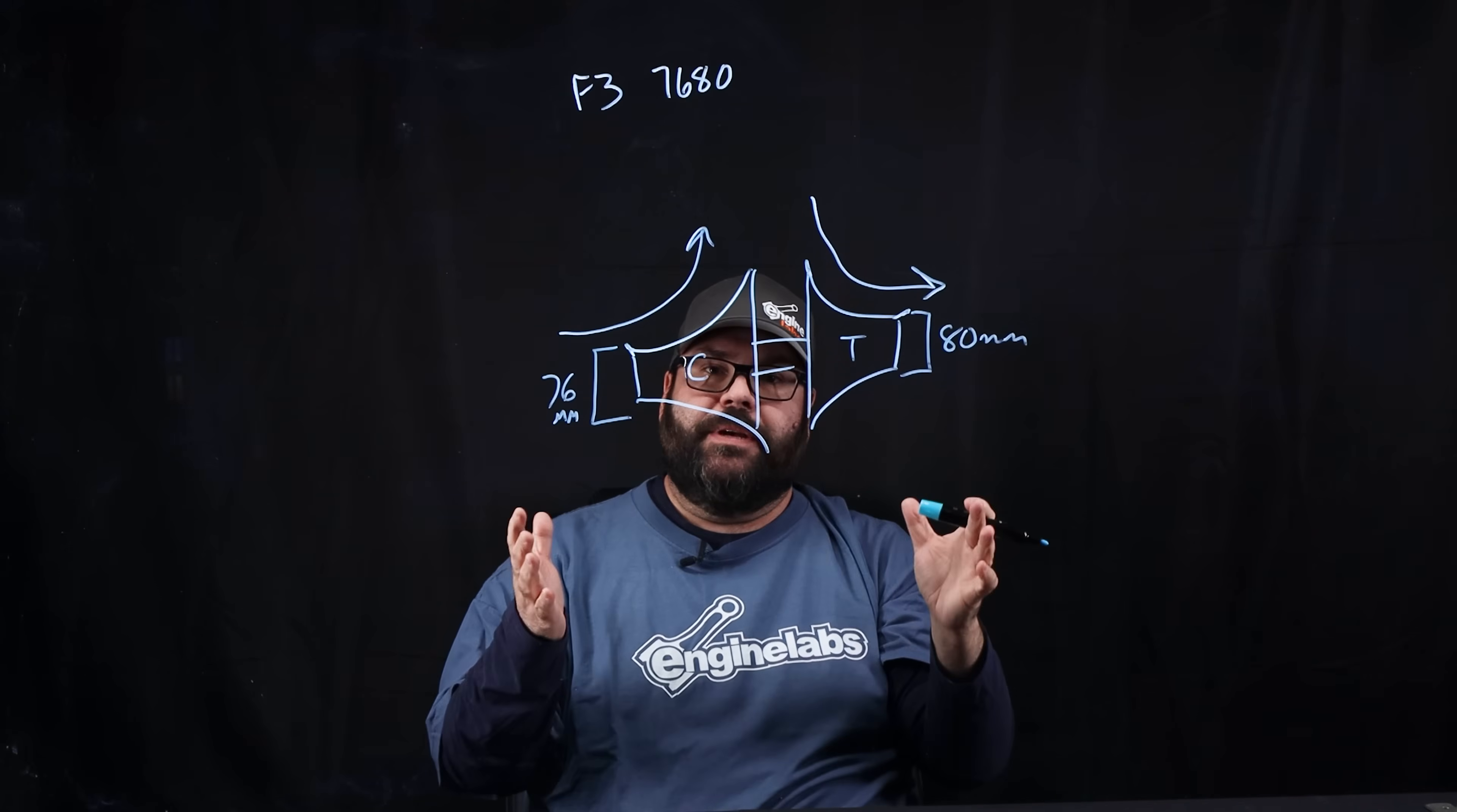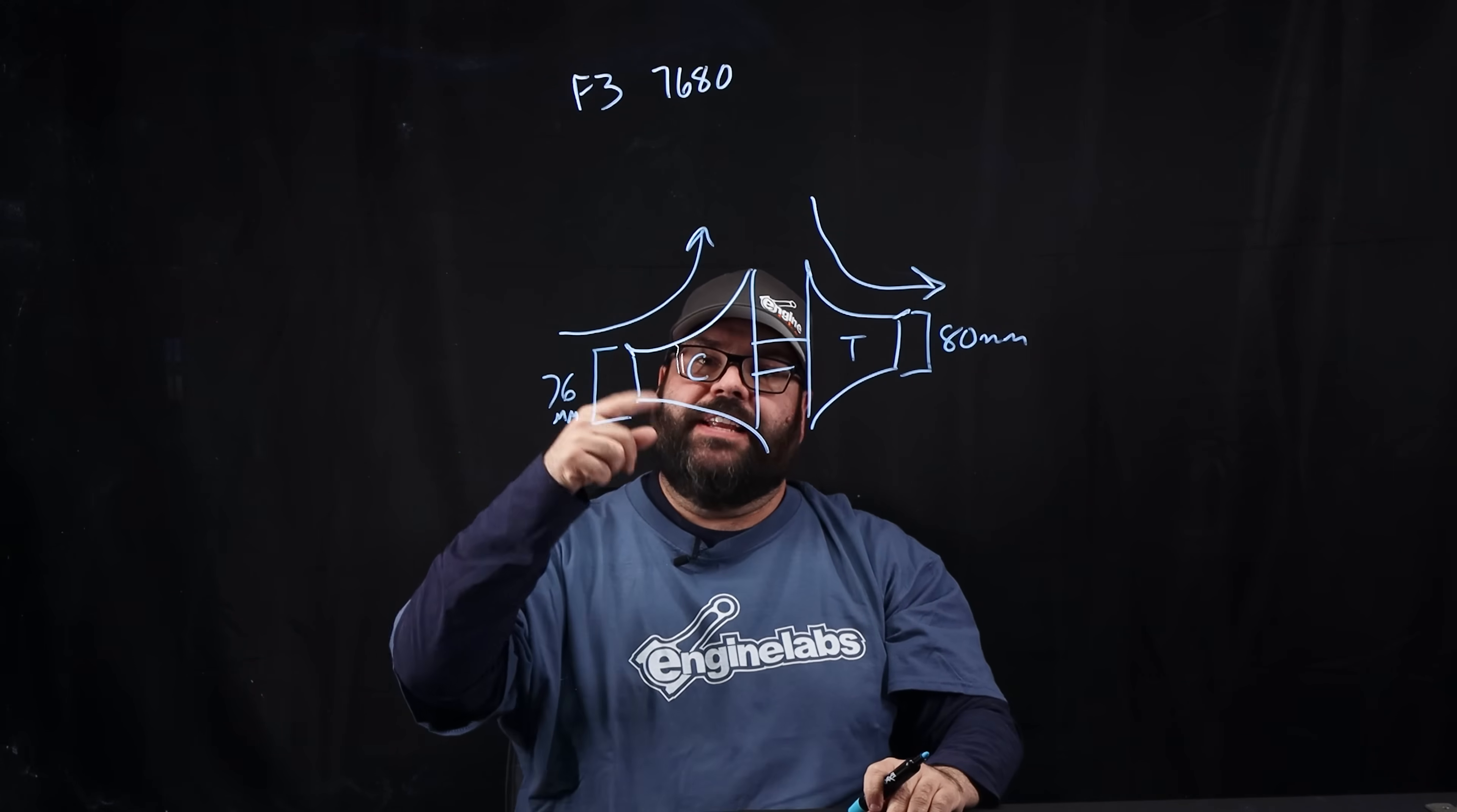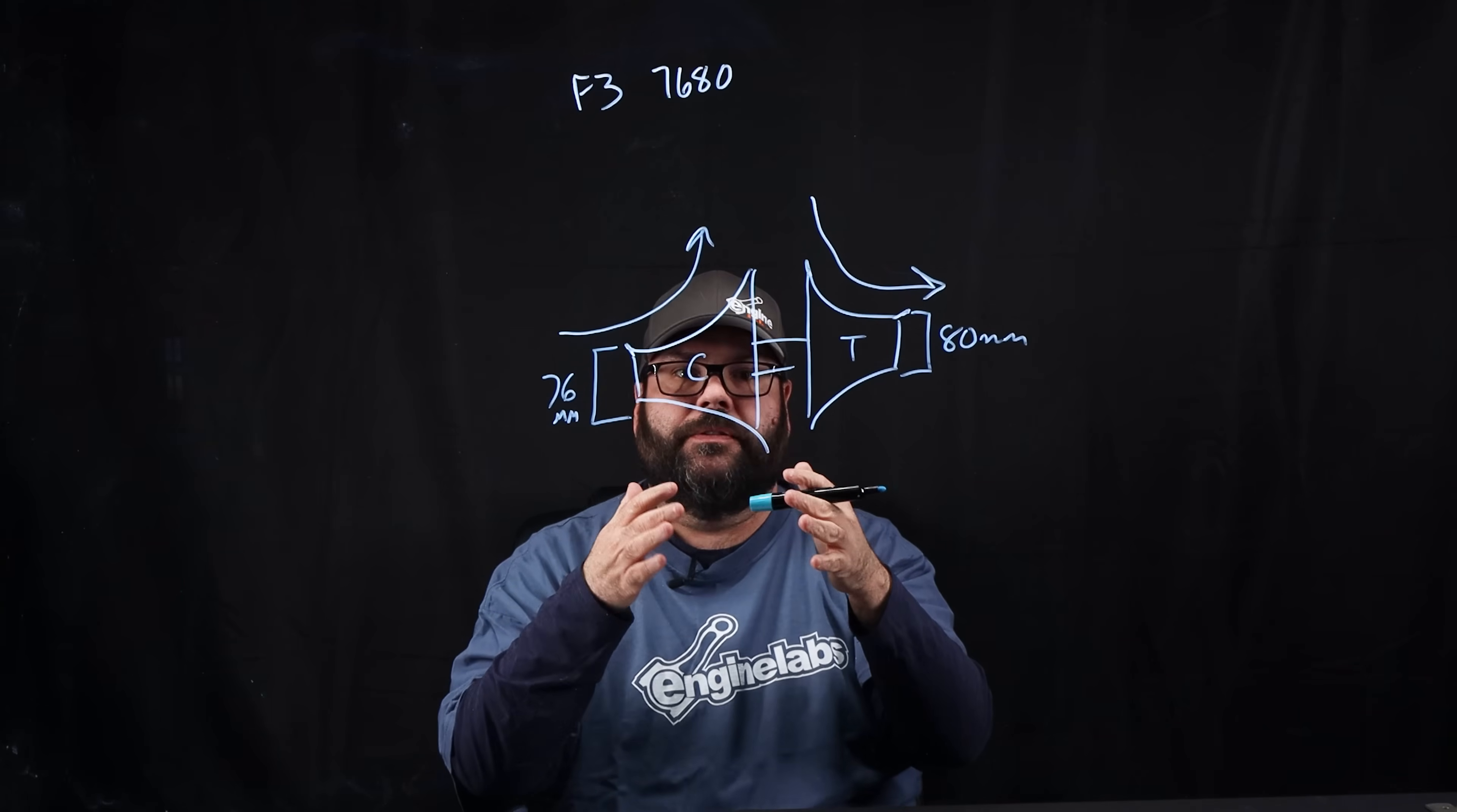That gives you a rough estimate of how the turbo is going to perform. For example, the one below and the one above would be the 7675, so you know that has a smaller turbine side, and then the 7880. So it's the same turbine side as we have, but with a larger compressor. So what we used was the 7680. That tells you everything you need to know about that particular model.